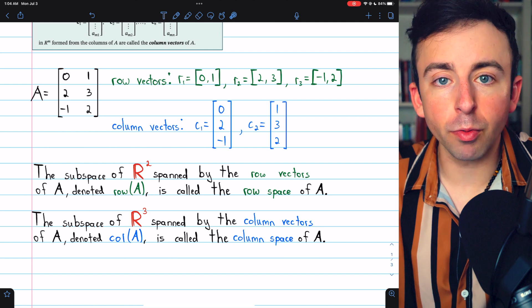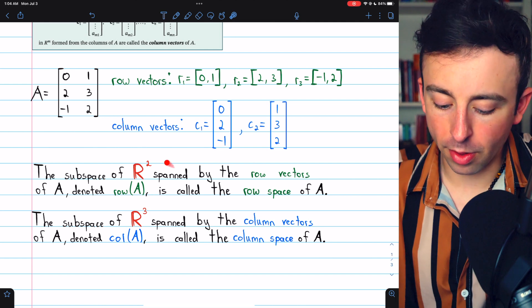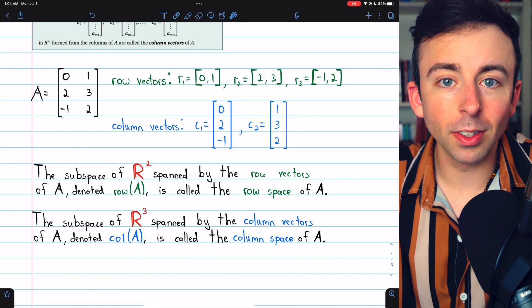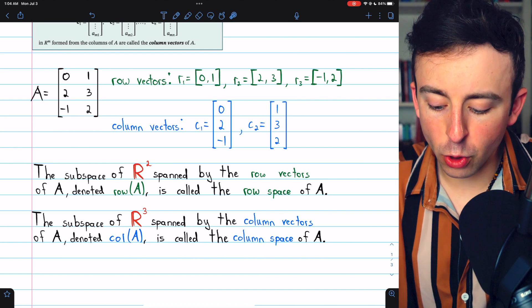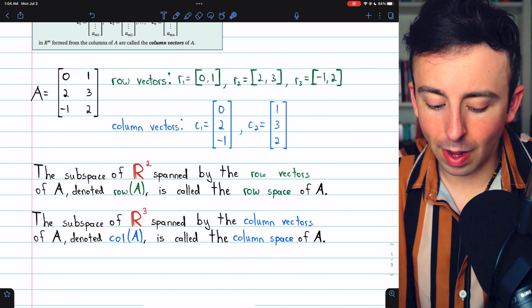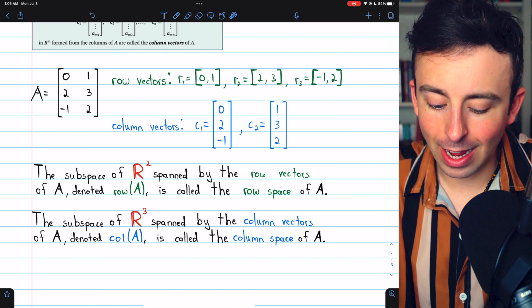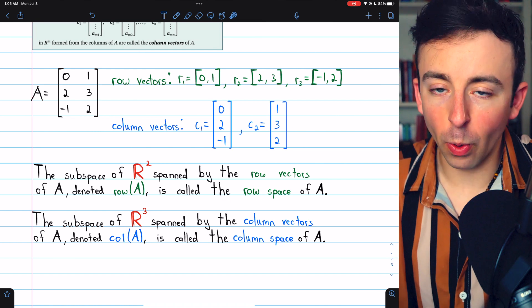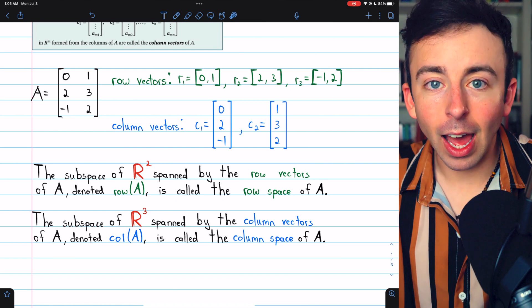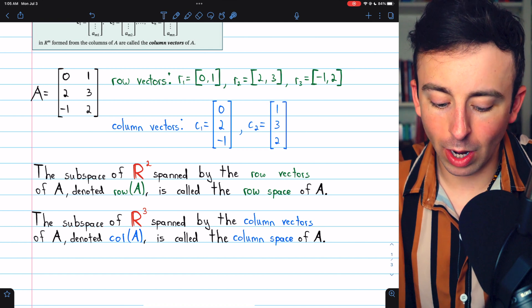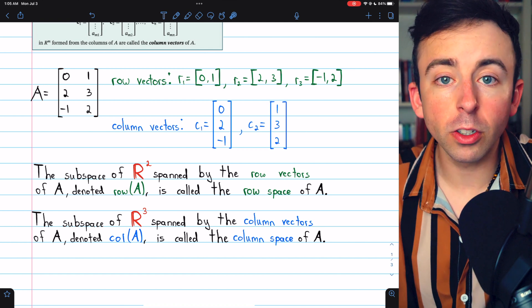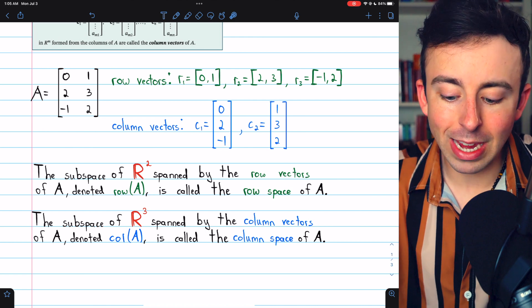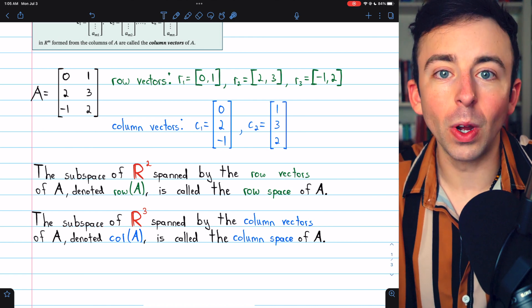Perhaps the most important part of row vectors and column vectors are these things, the row space and the column space, which we'll talk about next time. The subspace of R2 spanned by the row vectors of this matrix A is denoted row of A, and it's called the row space of A. Again, this is specific to this matrix A, that's why this is a subspace of R2, because A has two columns, so each row has two entries.